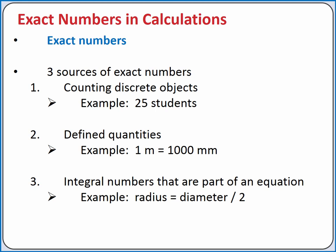The first is when you're counting discrete objects. For example, there are 25 students in a classroom. This number is exact because you couldn't have 25.5 students. The second source of an exact number is in defined quantities. In the conversion factor shown, one meter is exactly 1,000 millimeters by definition. We'll use conversion factors in dimensional analysis.